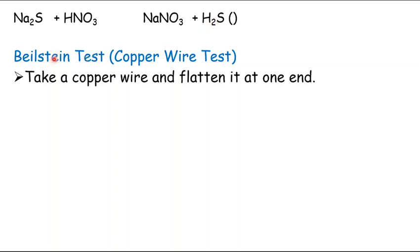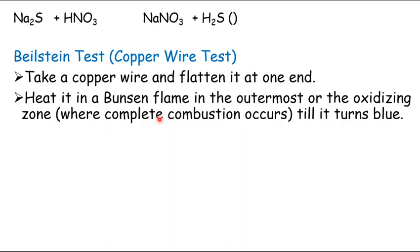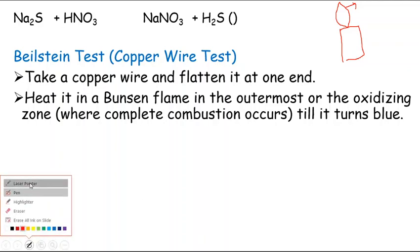The next test for detection of halogens is the Beilstein test, also called the copper wire test. We take a copper wire, flatten it at one end, and heat it in the outermost region of a Bunsen flame. We heat it until it turns blue-green and no further colour is imparted to the flame.